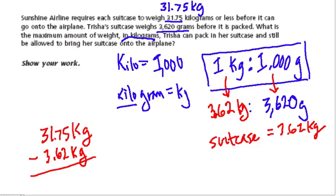I want to know how much is left, and that's going to tell me how much more she can pack. So this is a part two question on a New York State test. We can use a calculator here. 31.75 minus 3.62, I'm getting 28.13 kilograms. And generally what I do, especially when I'm using a calculator, is I do that step twice. So 31.75 minus 3.62 and I get 28.13. So she could pack 28.13 more kilograms in her suitcase and still be allowed to bring her suitcase onto the plane.